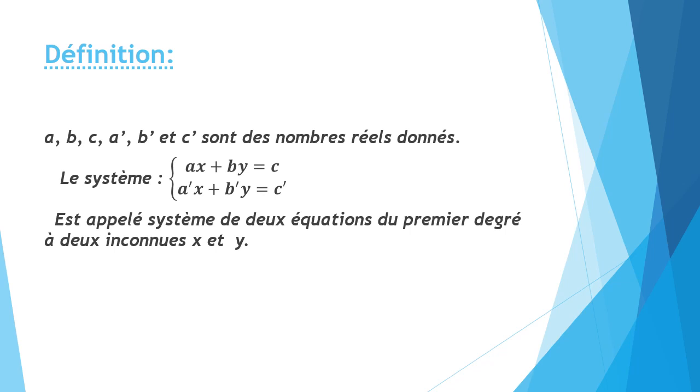Ses différentes méthodes de résolution et comment résoudre un problème mathématique par tel système. On appelle un système de deux équations du premier degré à deux inconnus, la donnée simultanée de deux équations du premier degré à deux inconnus. C'est-à-dire on va travailler avec deux équations en même temps.